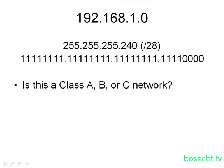Namely, is this a class A, B, or C network, 192.168.1.0? Well, the answer is it's a class C network, and we know that by looking at the first octet.